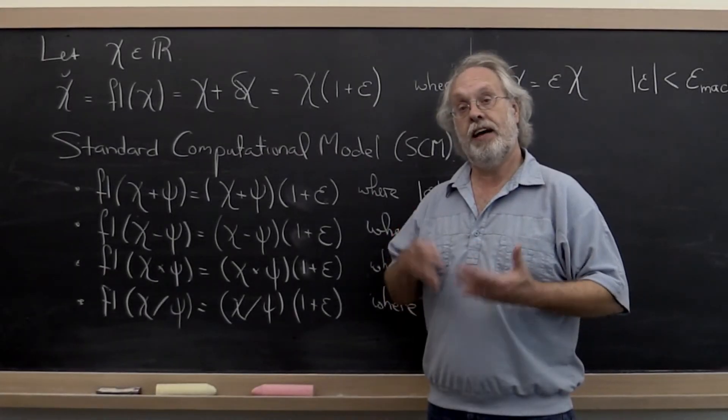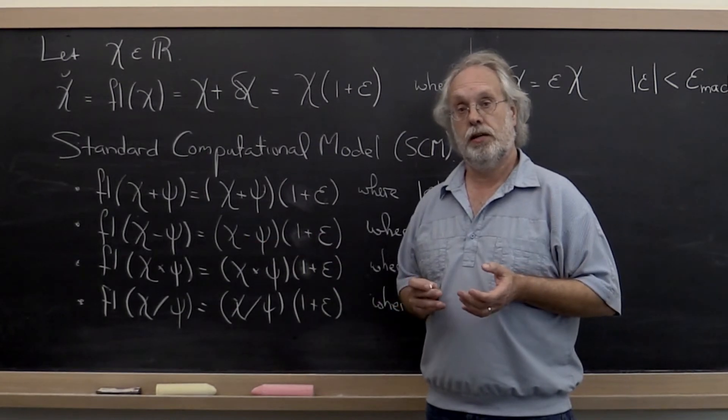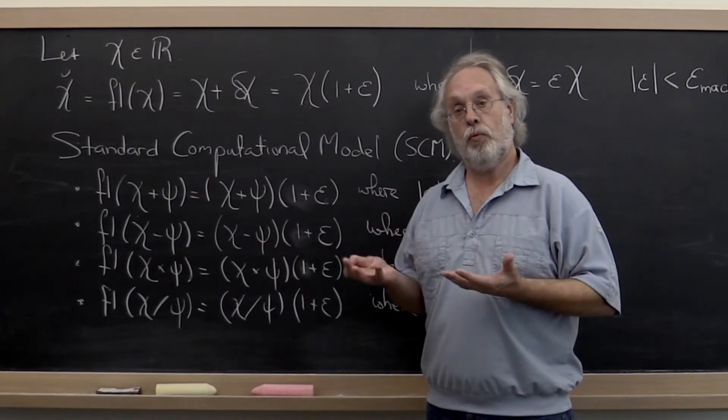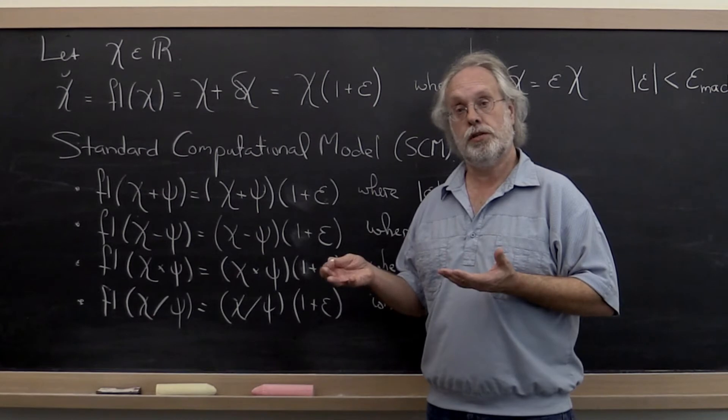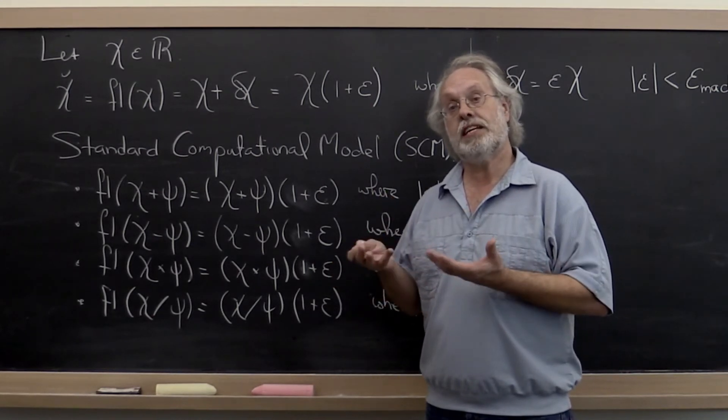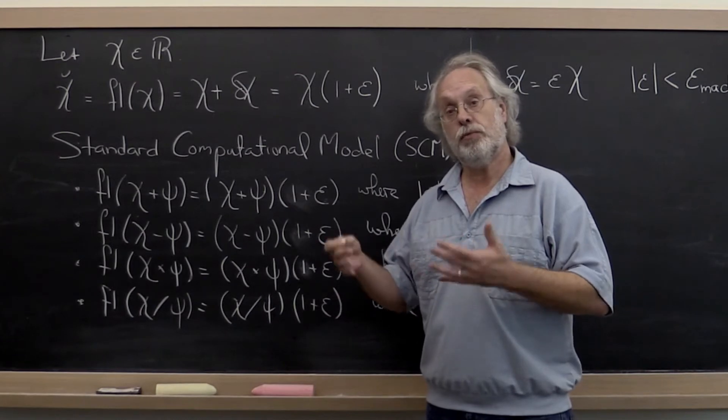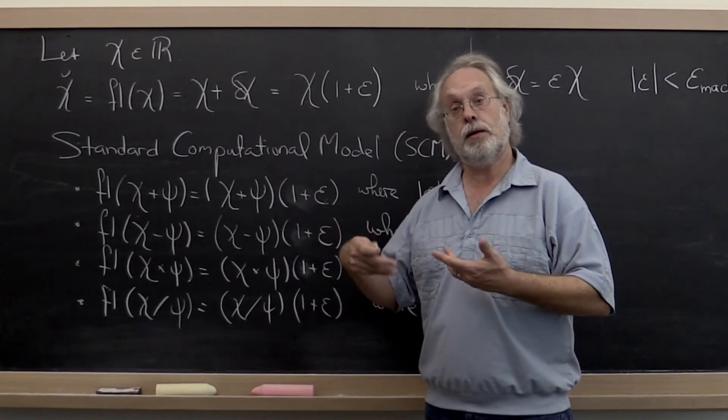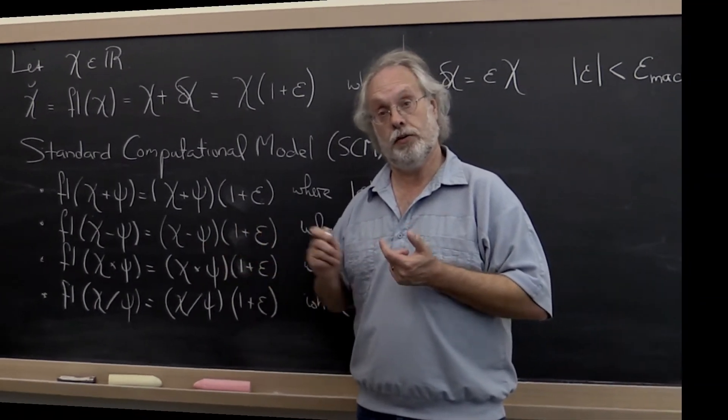When the computer evaluates an expression, every time you do an operation with floating-point numbers, you can think of this as if the exact number is actually computed, but then the result needs to be stored as a temporary intermediate value.